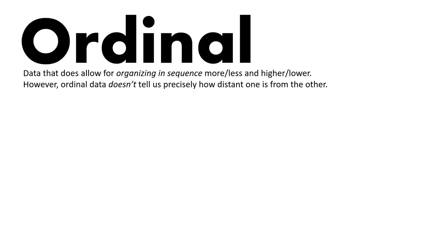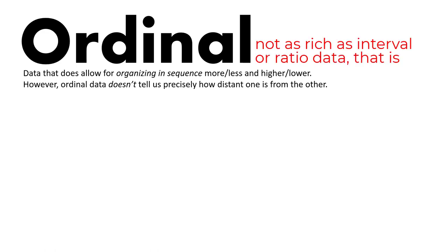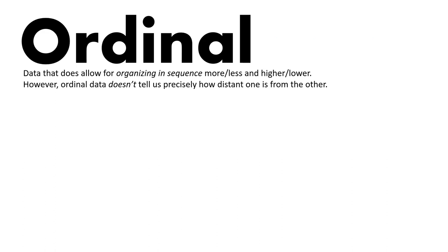When the measurement we take is ordinal level data, we are capable of organizing the data in sequences of more to less or higher to lower. This is different from nominal data where we couldn't rank or sort things into a meaningful order. However, ordinal level data still has a limitation: even though we can rank the data, we don't know exactly how distant data points are from one another.